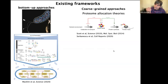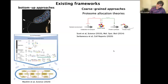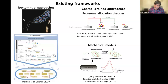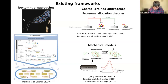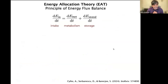Two coarse-grained approaches have been popular. One is resource allocation models — how cells allocate ribosomes to synthesize different sectors of proteins inside the cell. These have been very successful in explaining growth physiology of bacteria, but they are devoid of physical activities and don't describe mechanical behavior. On the other hand, mechanical models of growth describe how cell shape is regulated and how it depends on mechanical forces. We really want something that combines mechanics and biochemical regulation.